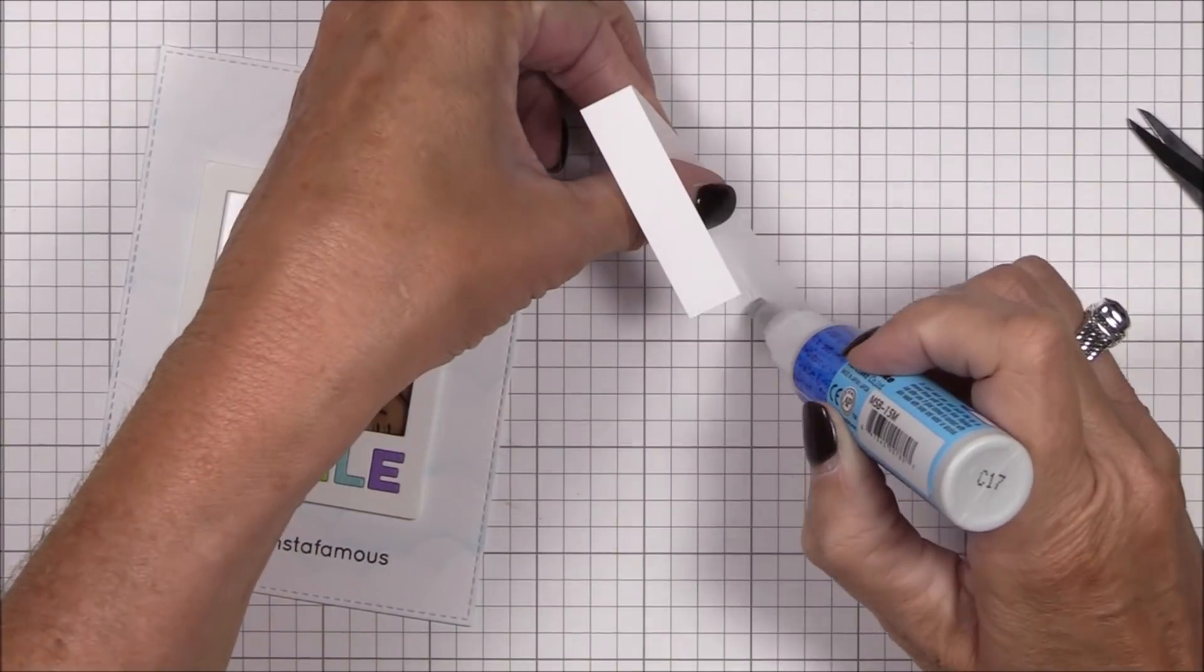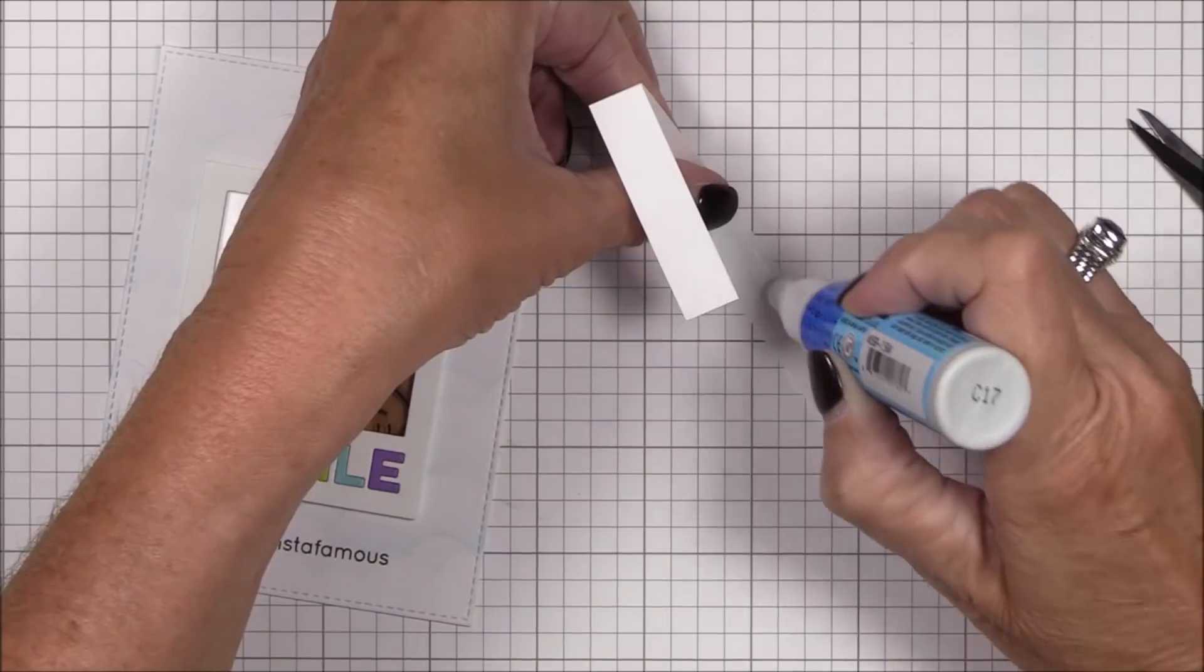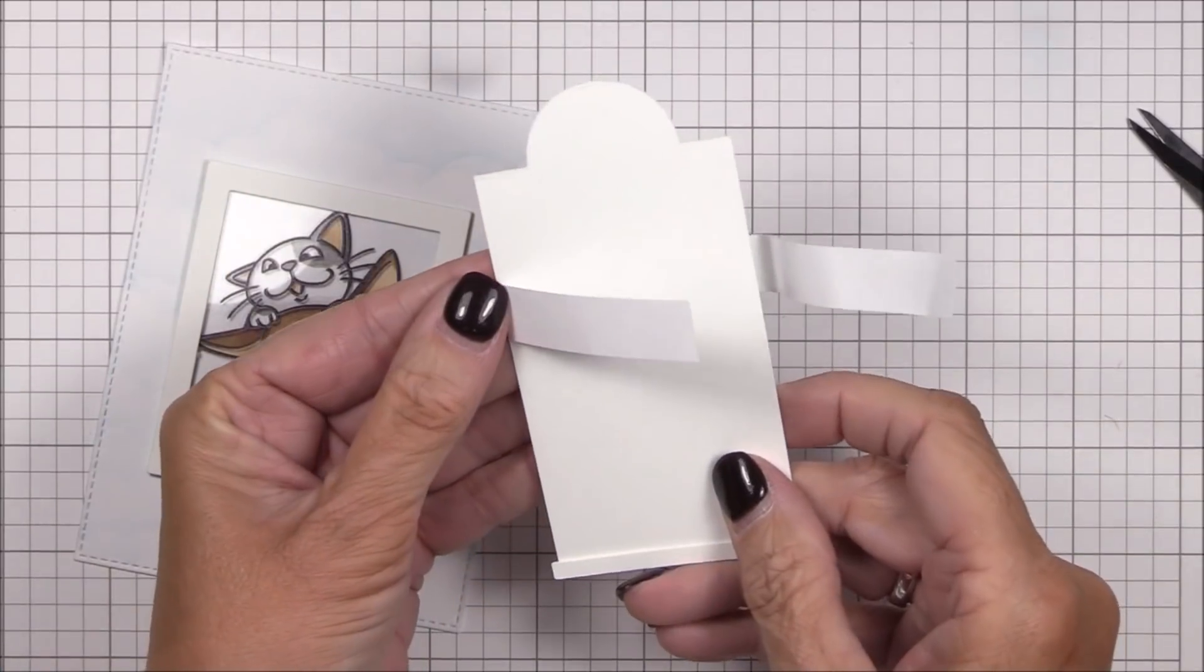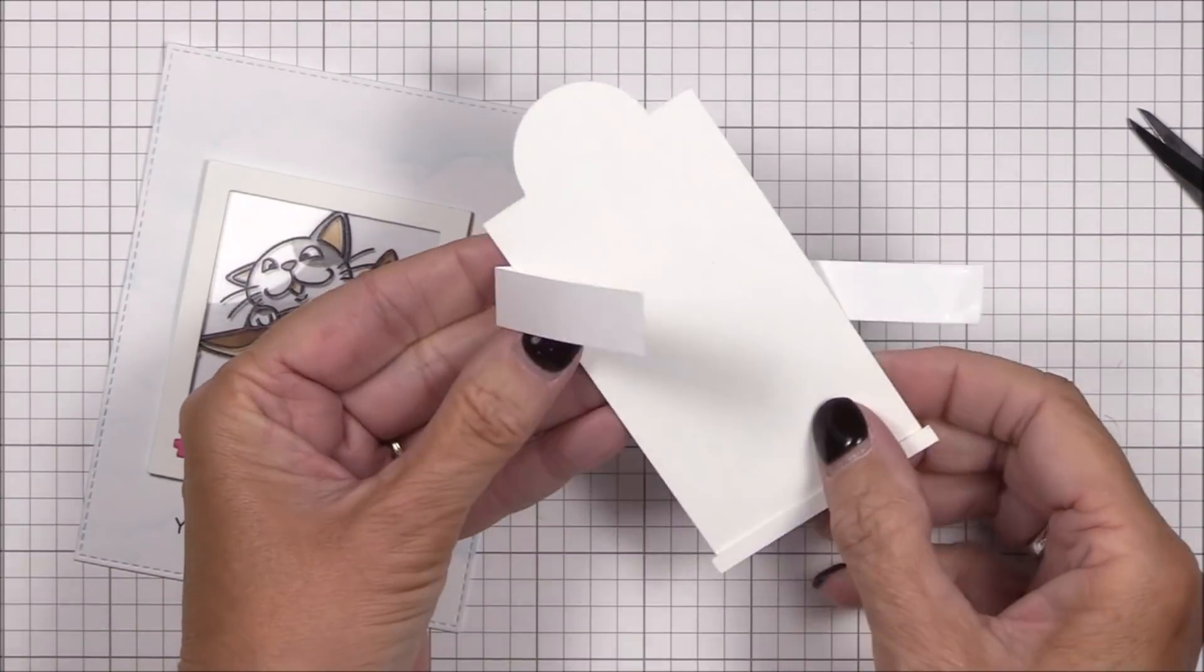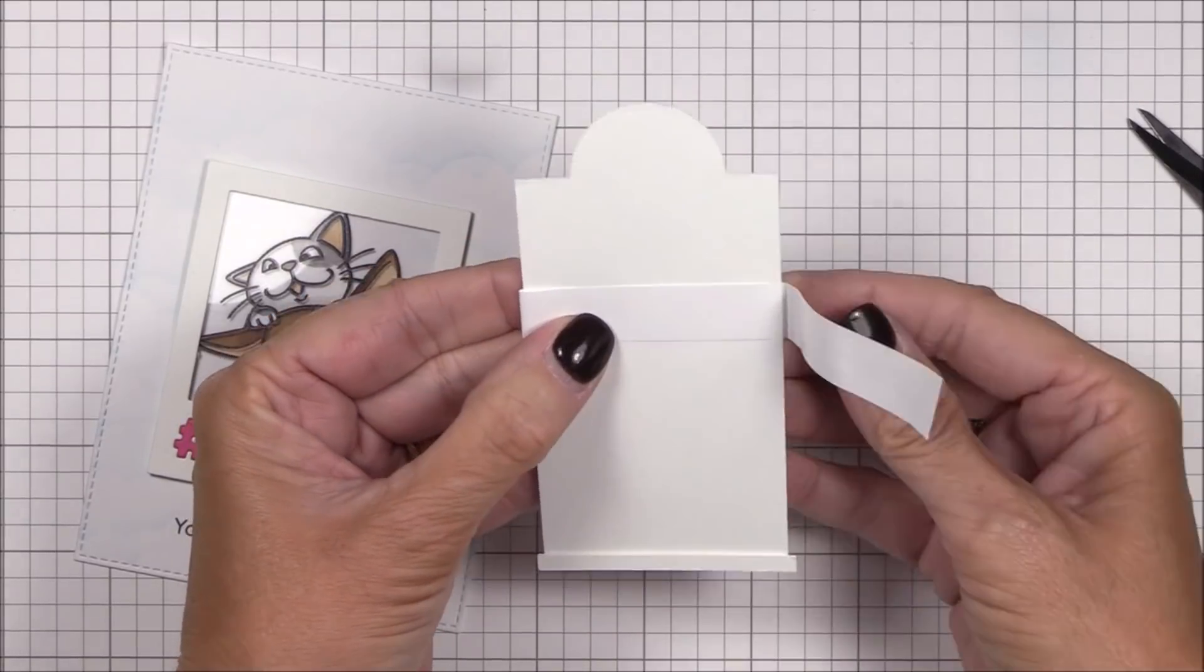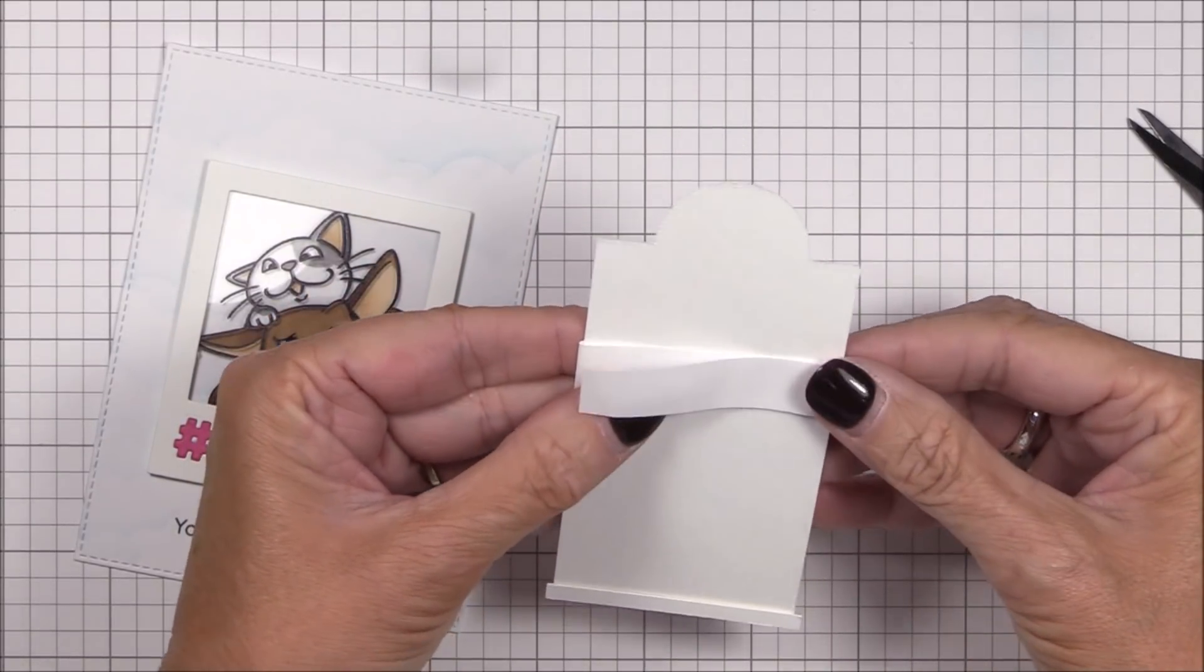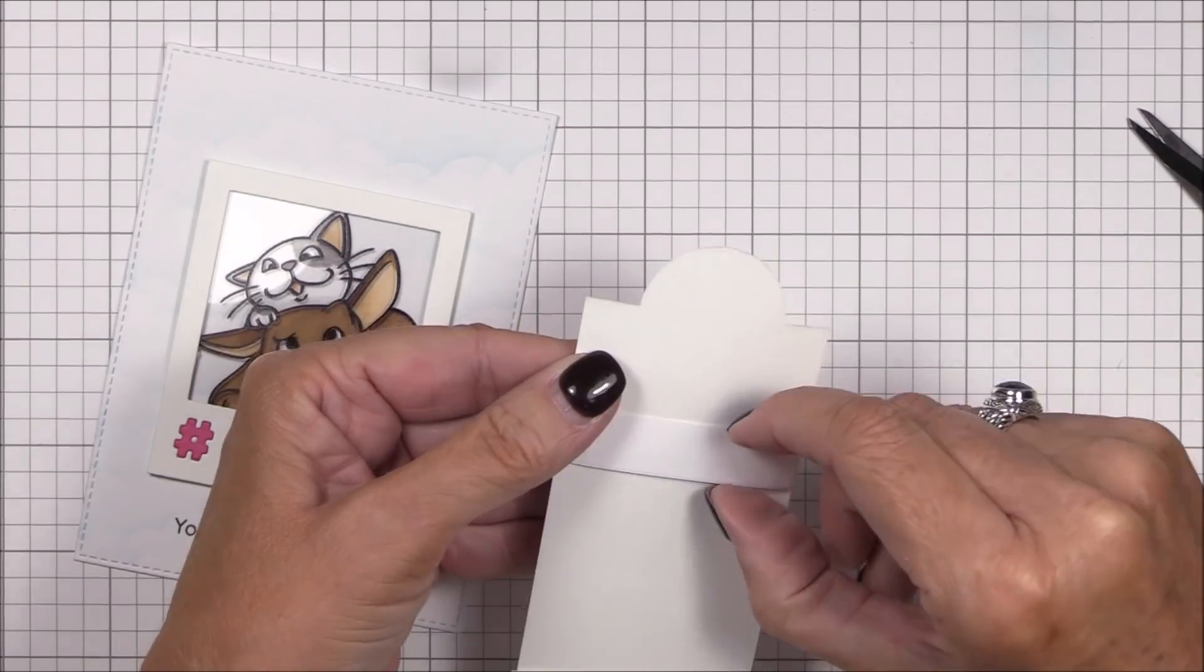And then I'll slip it over the top of the slider panel, slide it into place, and adhere it to the back of the image panel with more liquid adhesive. This is the easiest way I've found to keep that slider panel in place without unnecessary bulk.